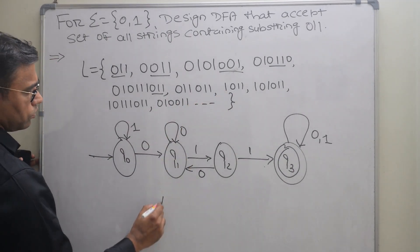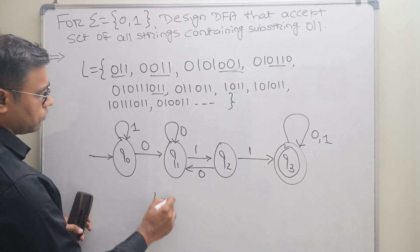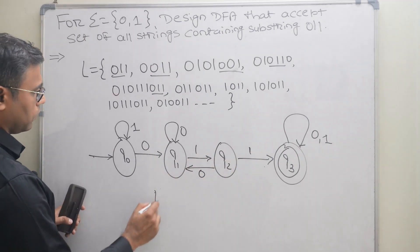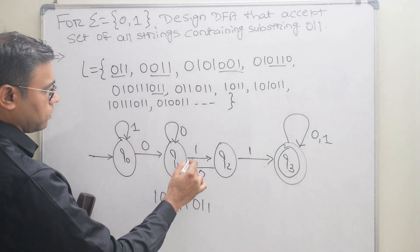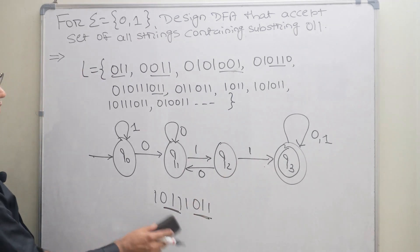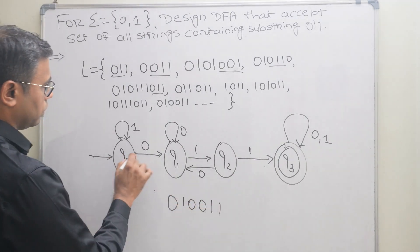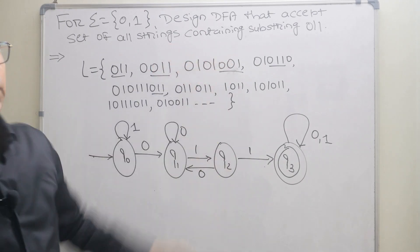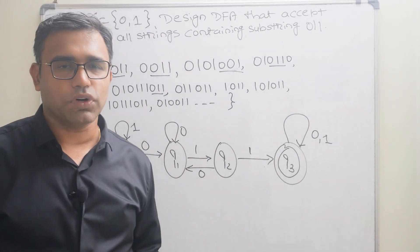We verify with test strings like 1011, 101011, 10110, and 010011 — all are accepted since they contain the substring 011. This is the final deterministic finite automaton accepting all strings containing substring 011. I hope you understand the question and answer. That's it for this video, thank you.